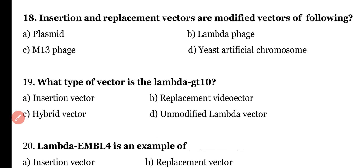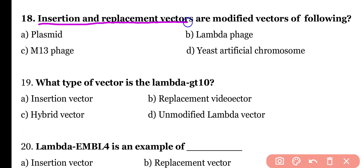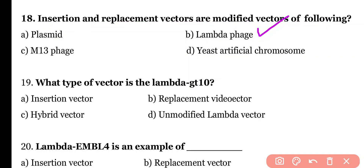Question 18: Insertion and replacement vectors are modified vectors of which of the following? Plasmid, lambda phage, M13 phage, or yeast artificial chromosome. Correct answer is option B. Insertion and replacement vectors are actually modified lambda phage vectors.